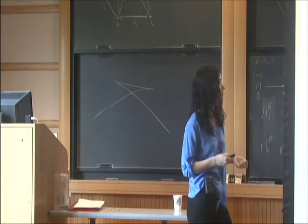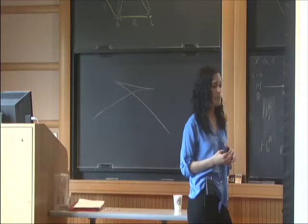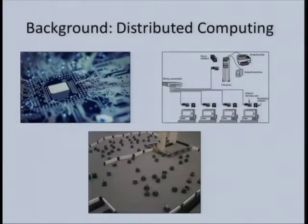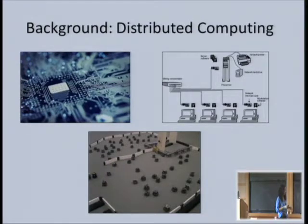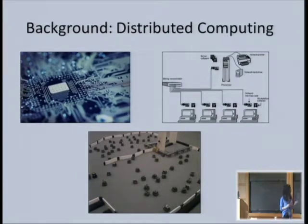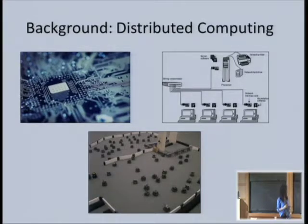From multi-core computers to local area networks, and all the way to wireless ad hoc networks where the participants are moving around and trying to compute something. The common thing to all of these types of systems is that the dominant cost in the computation—the most expensive thing—is actually communication, not the local computation that every participant is doing.